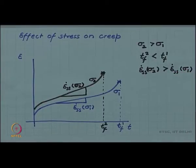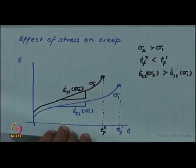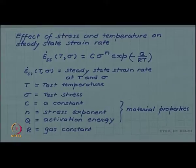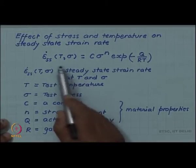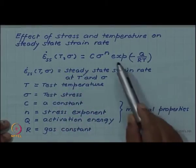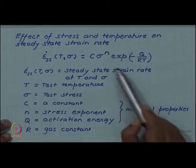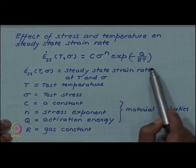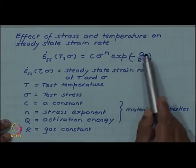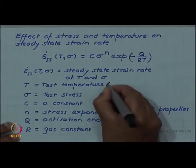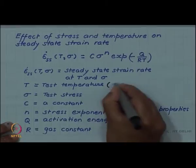This stress dependence and the temperature dependence can be given as an equation. Here is the equation: steady state strain rate depends on the stress and temperature. The temperature dependence is the familiar exponential dependence, exponential minus Q by RT, where T is the test temperature in Kelvin.